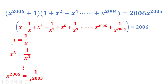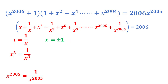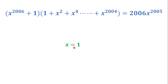Now we have 1003 equations. We can solve one of them: taking x = 1/x and multiplying both sides by x (since x ≠ 0), we get x^2 − 1 = 0, giving x = ±1. If we replace x by −1 we get 0 = −2006, which is not correct. So −1 cannot be a solution, and the only solution is x = 1.